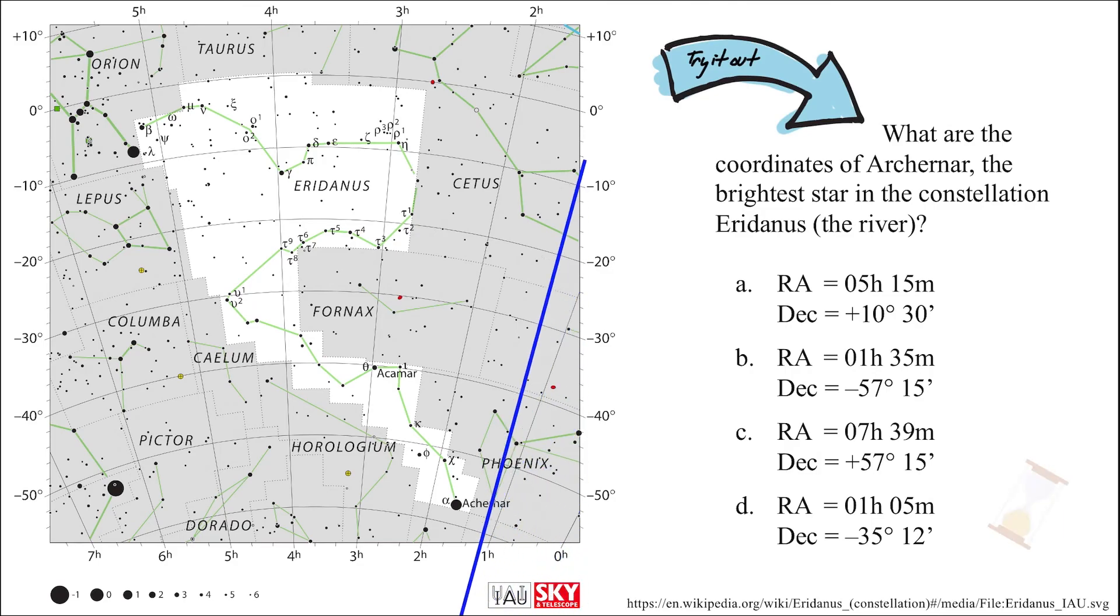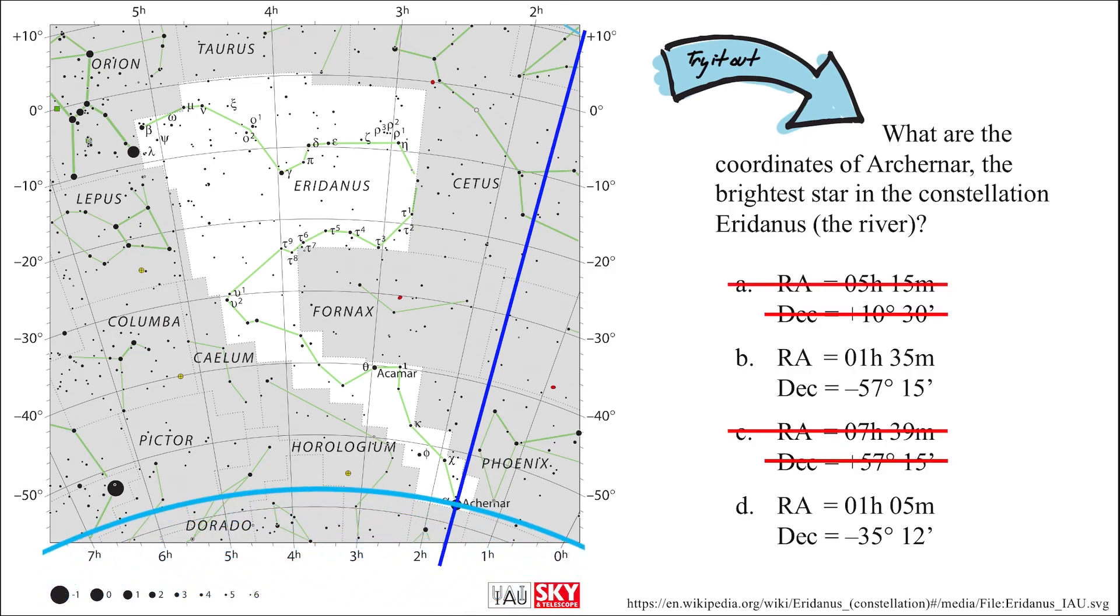If you look closely, you can see that Akronar's right ascension is between the first and second hour circles, so that removes options A and C as possible answers. Then we take a better look at the declination, which measures in at a value below negative 50 since the declination is in the lowest portion of the chart, so that implies that option D is also not correct.